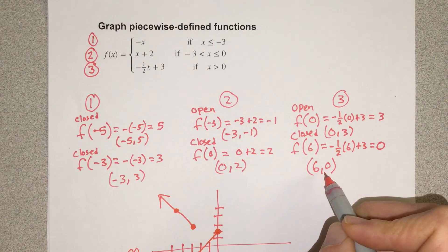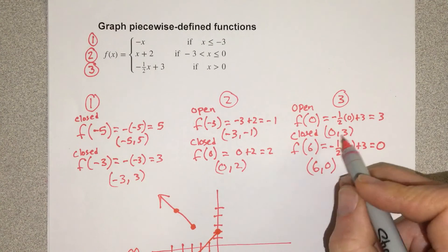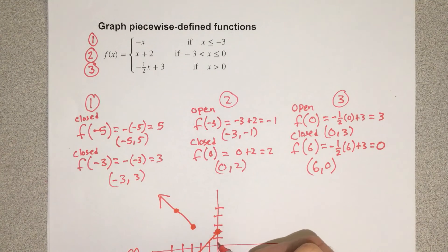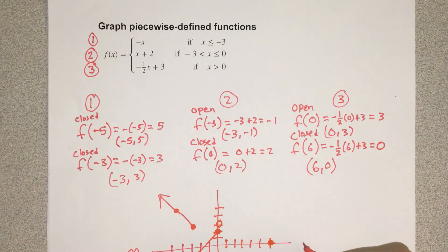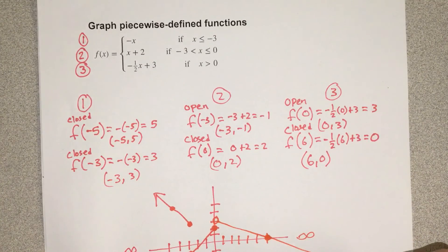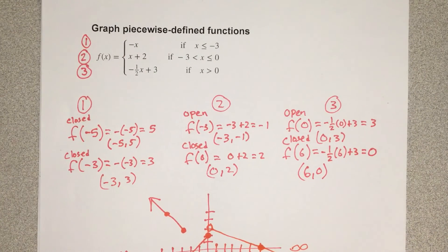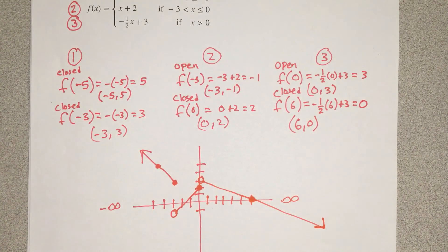Then I'll plot (6, 0) and (0, 3). Starting with (0, 3): that's an open dot. Then (6, 0) is a closed dot, and that line is going to go toward positive infinity in that direction. And so that's how you graph piecewise defined functions.